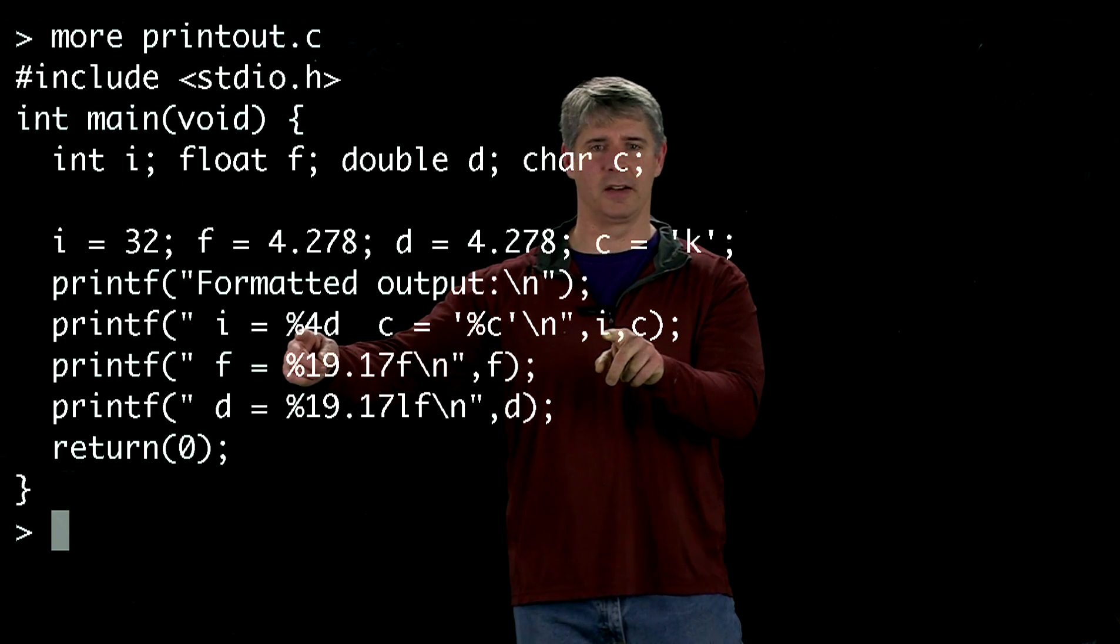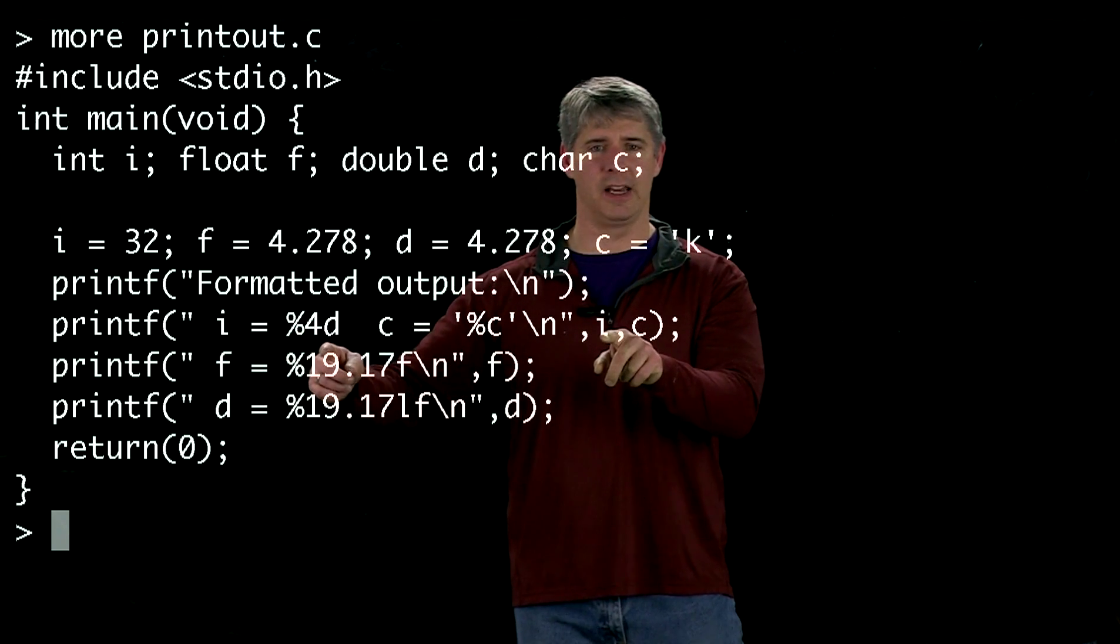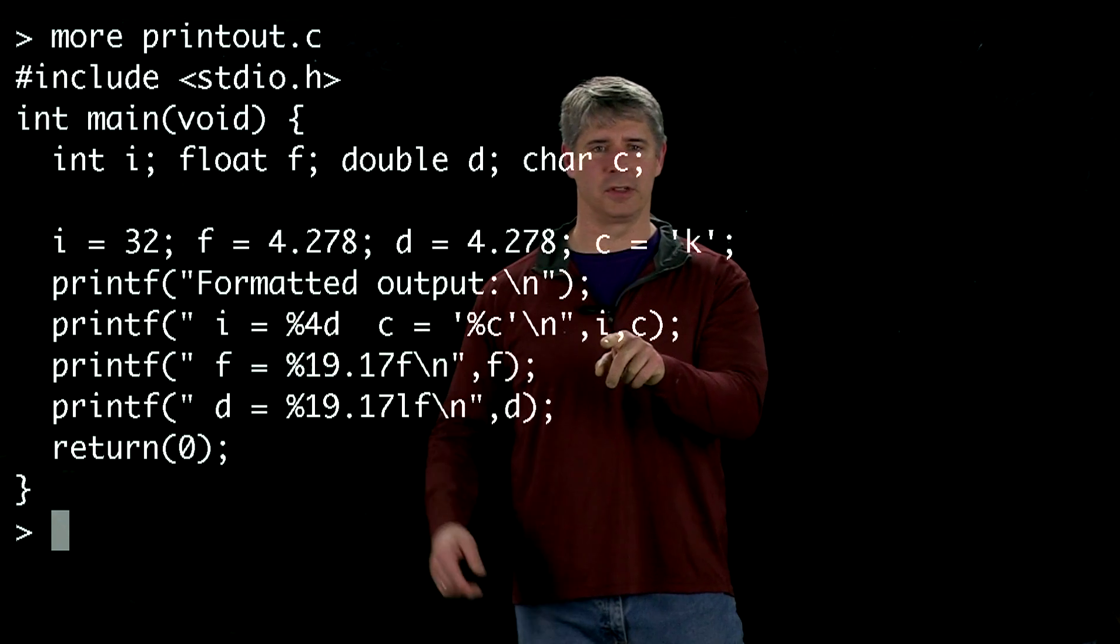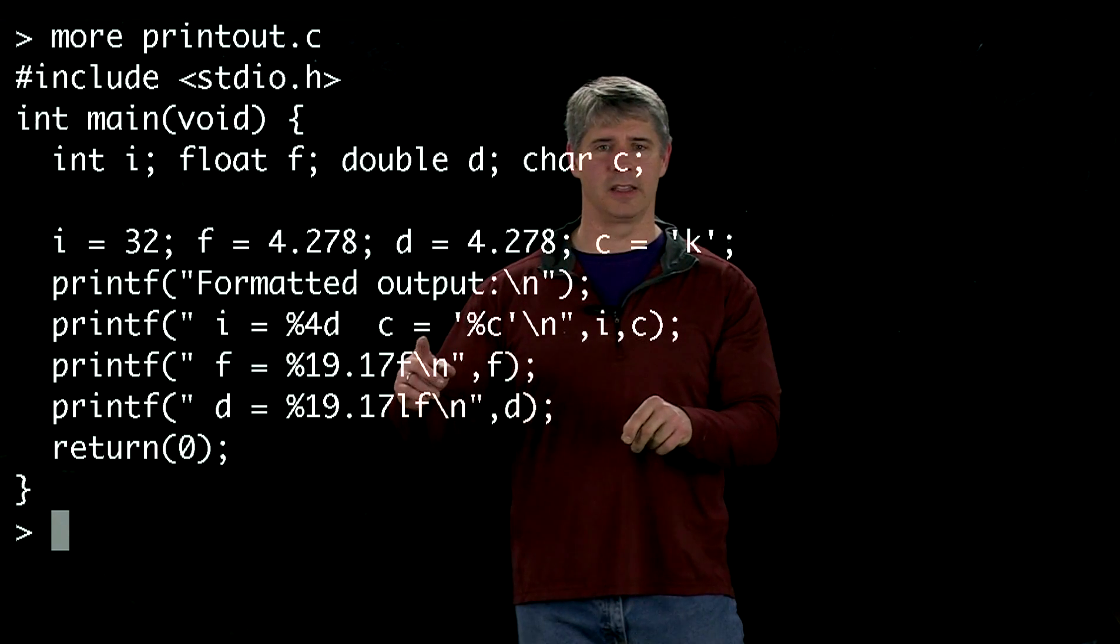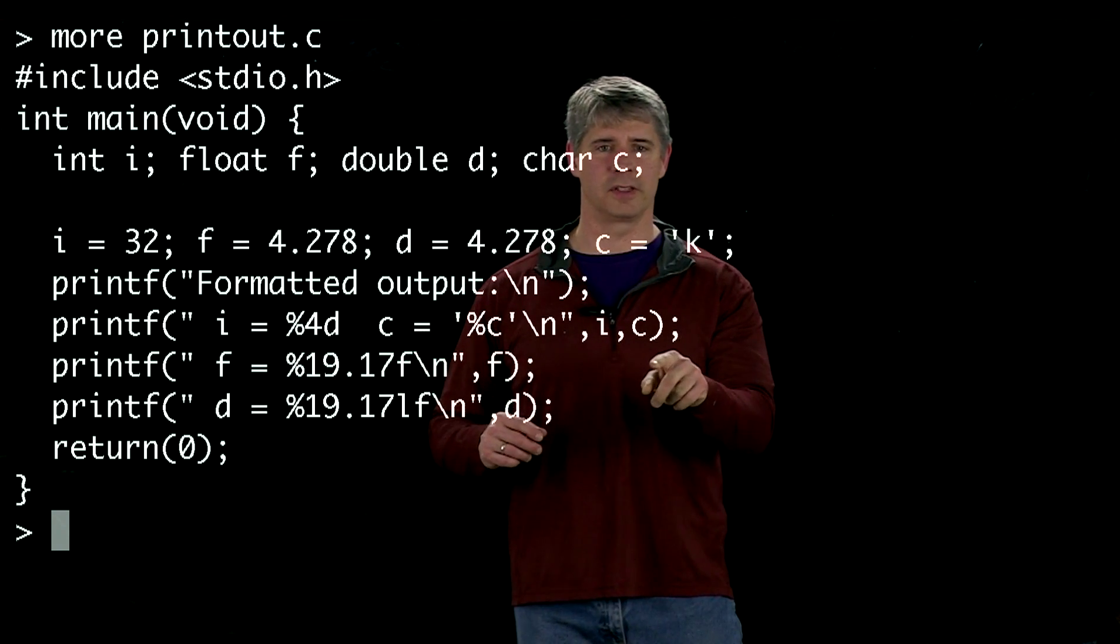So we're going to say i is equal to this value gets printed out, and then c is equal to this value of c. %d means we're going to print it as an integer. %c means that we're going to print it as a character.